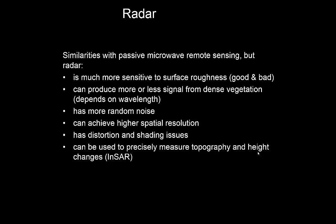Radar can produce more or less signal from dense vegetation — that really depends on the wavelength, as we'll see. It's got more random noise, and we'll see some of that in the imagery. It can achieve higher spatial resolution than passive microwave remote sensing because we're providing energy through our radar signal. It does have distortion and shading issues. But one of the really valuable things about radar is it can quite precisely measure topography and height changes using, for instance, interferometry — within centimeters or even better.